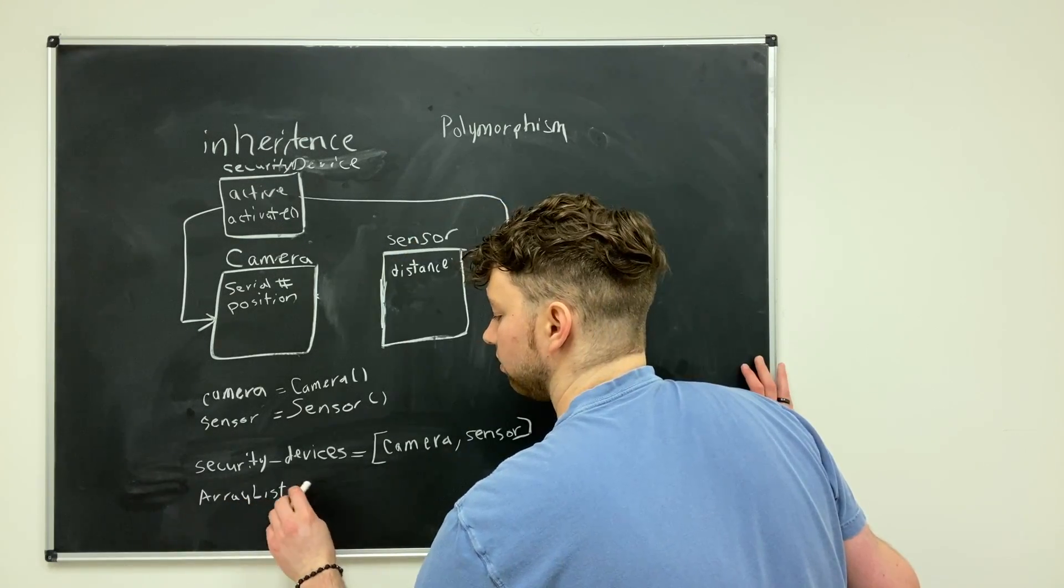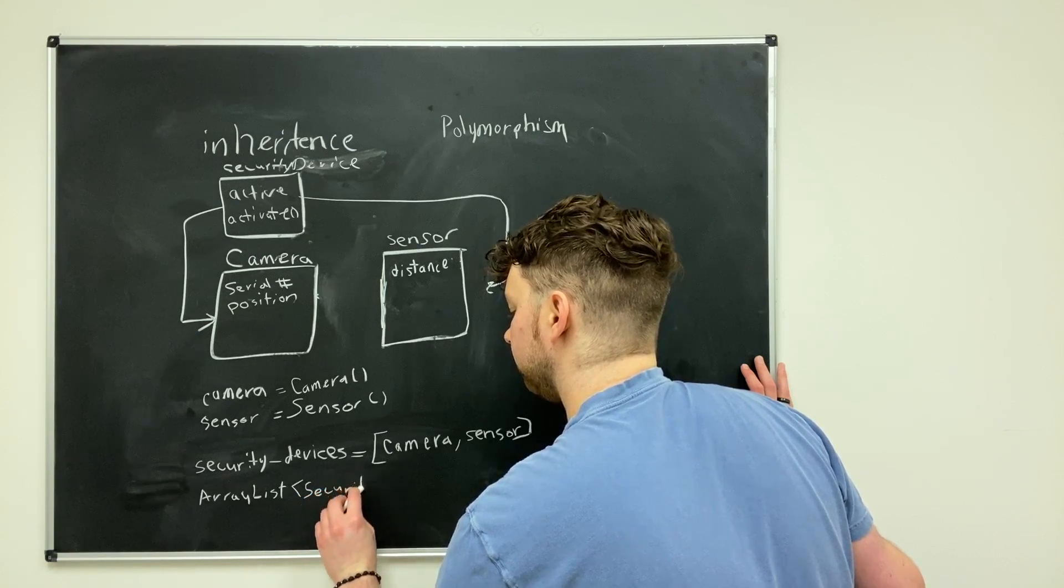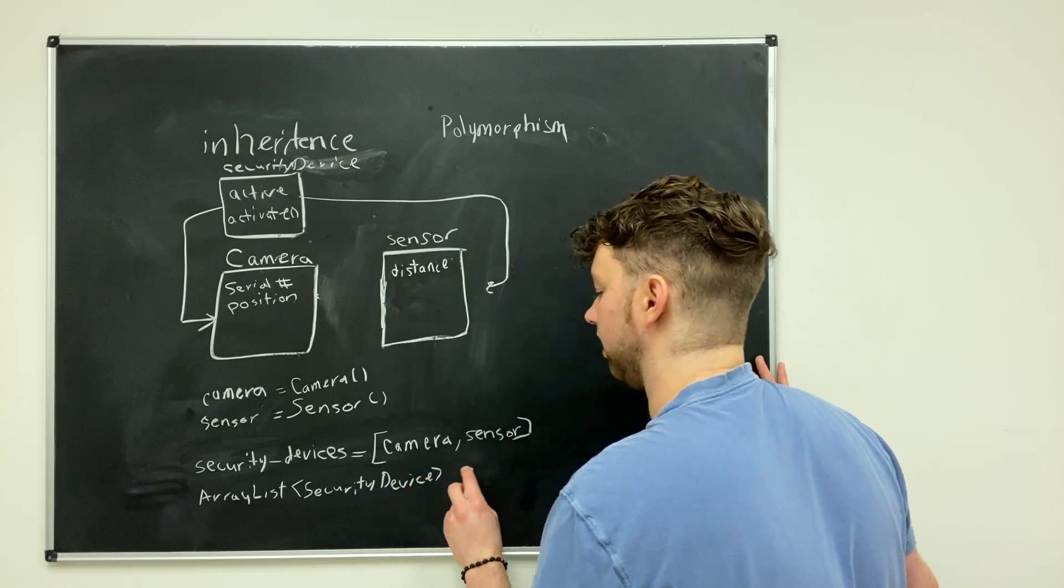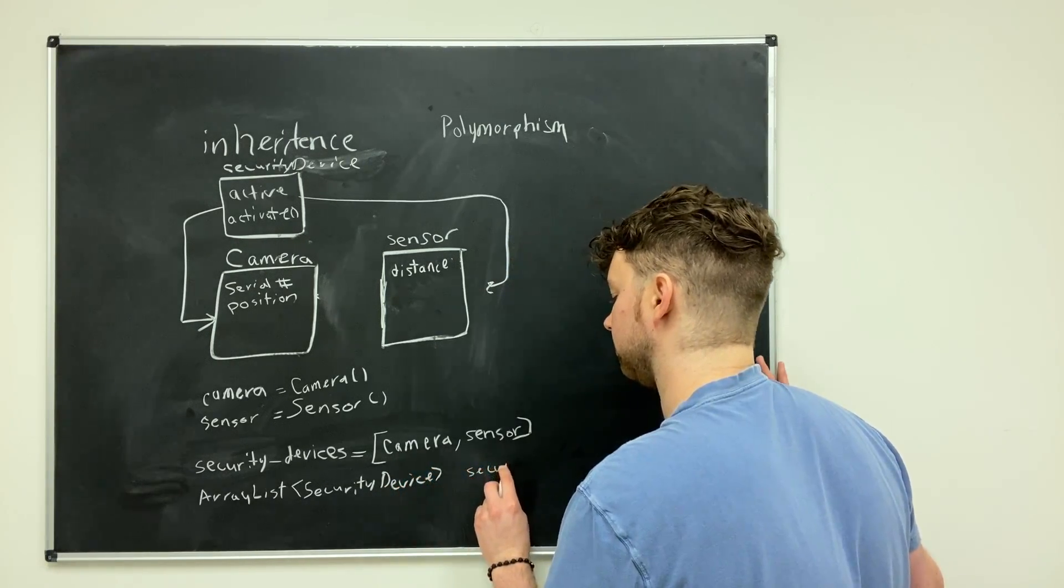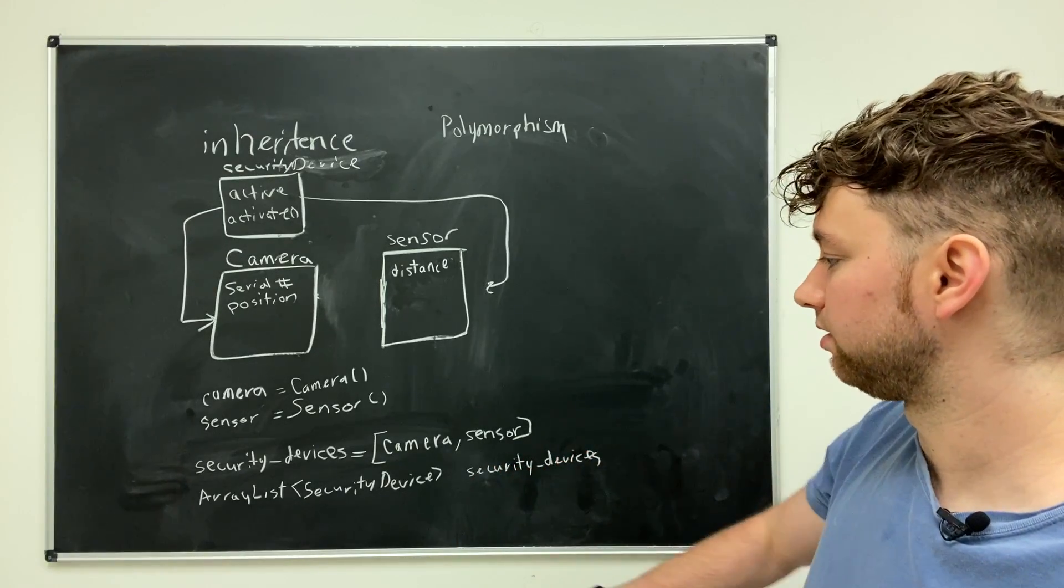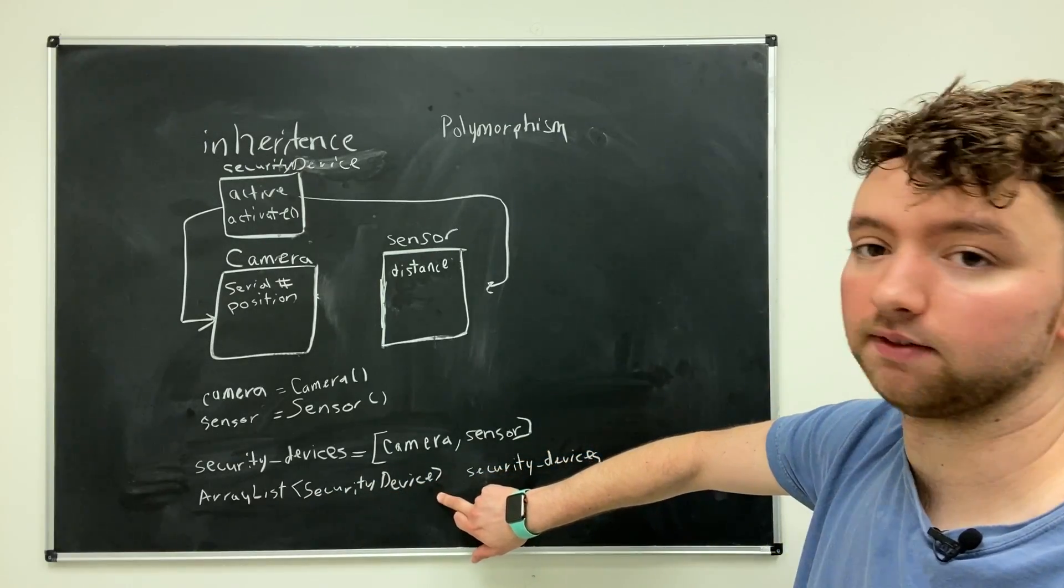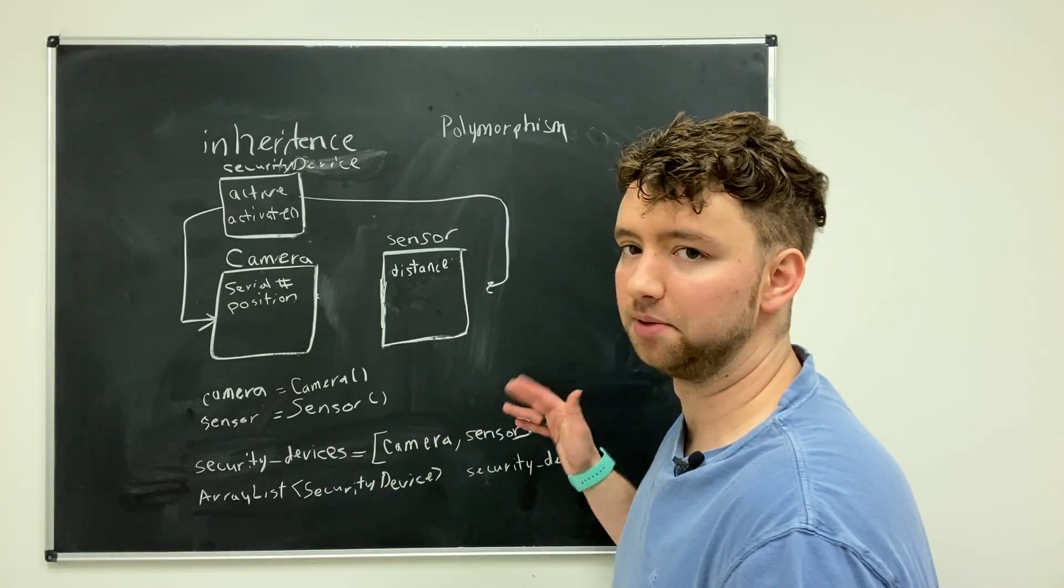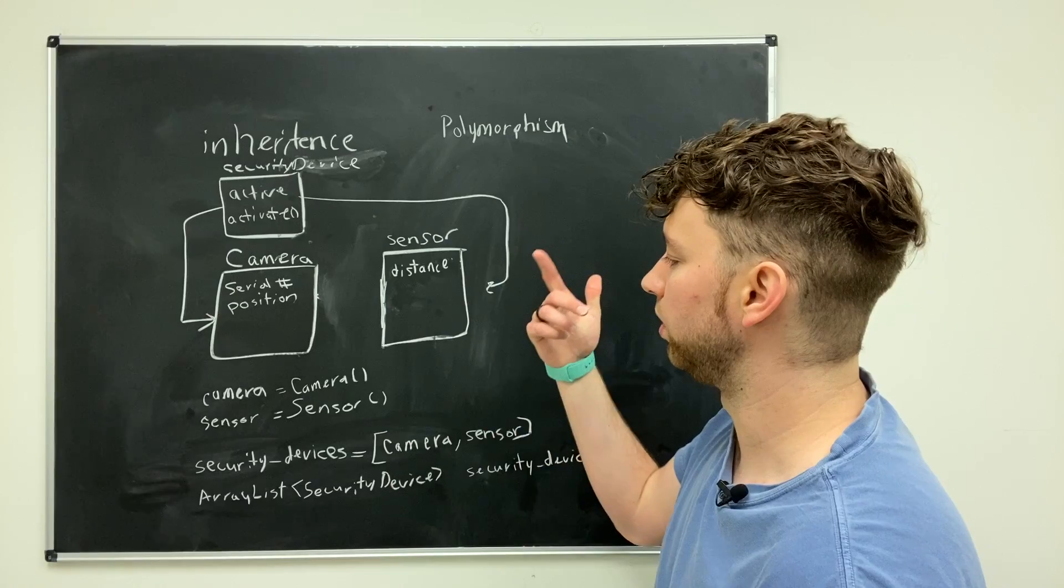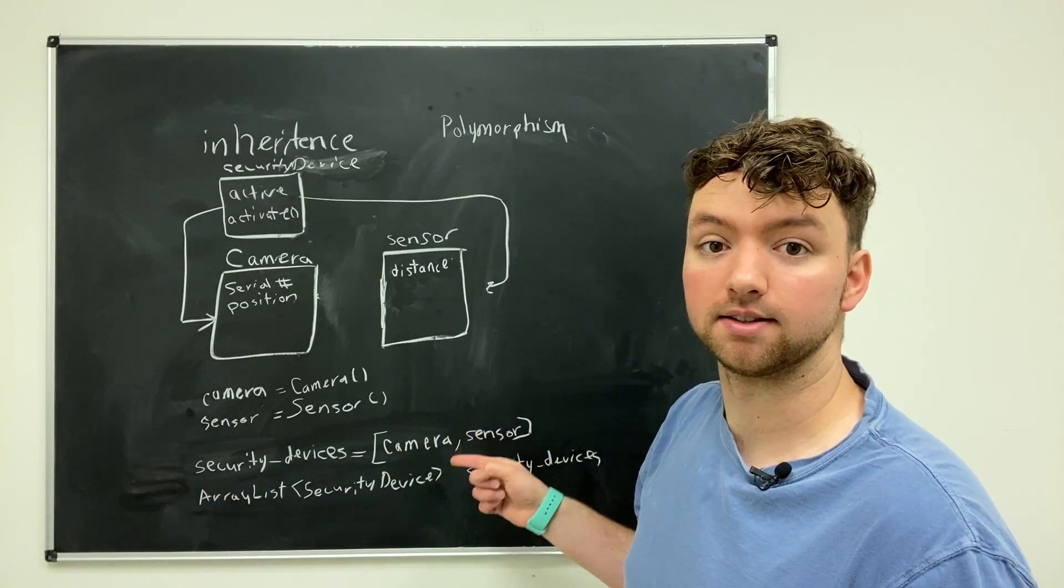If you're in C sharp or Java, it might look like so. You'll have an array list or a list interface type of type security device. And then you would give it a name such as security devices. So in those languages, the variables are typed. So you have to say what type it is ahead of time. It's going to be a list of security device. Python don't give a crap. So it's just a list. You can put whatever you want in there. But just for our sanity and just to keep our code safe, we are going to just put anything that derives from security devices inside of this list.